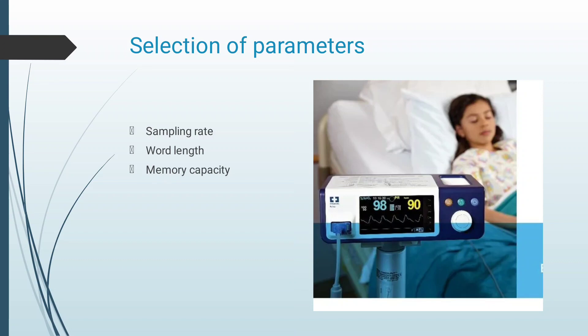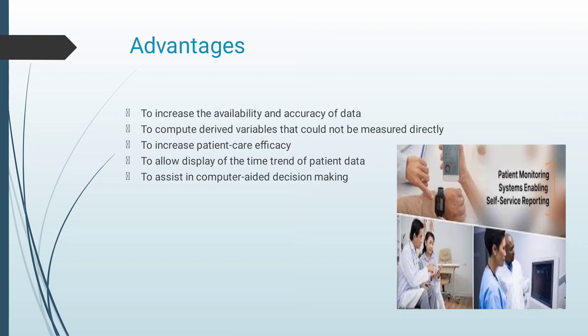Memory capacity: it contains the memory for each signal and displays each channel. Stored signals must be scrolled on a CRT display with a time interval. Advantages of the patient monitoring system: it increases availability and accuracy of data, computes derived variables that could not be measured directly, increases patient care efficacy, allows display of the time trend of patient data, and assists in computer-aided decision making.